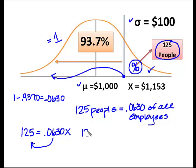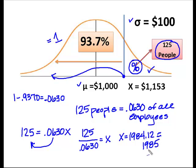I end up with 125 divided by 0.0630 equals some unknown value. And when I end up doing that, what I know is that X is going to equal 1984.12, and since we can't have 0.12 of a person, what we're going to do is round up and say 1,985 people work at Wanda's.